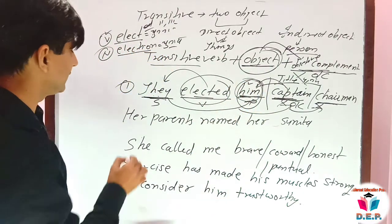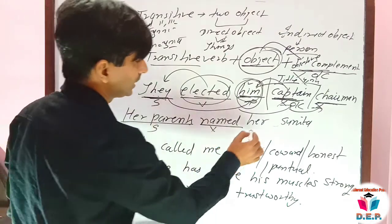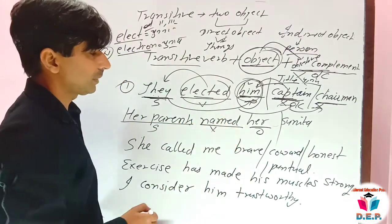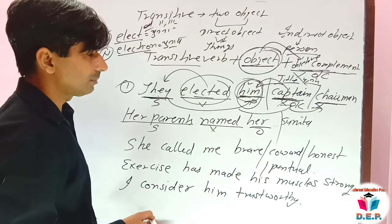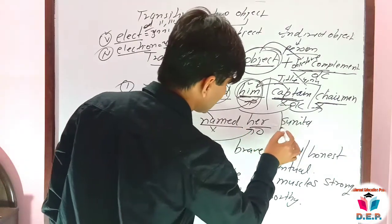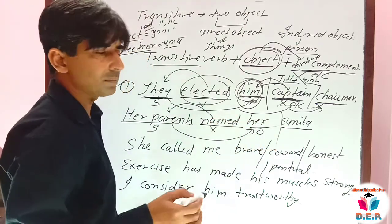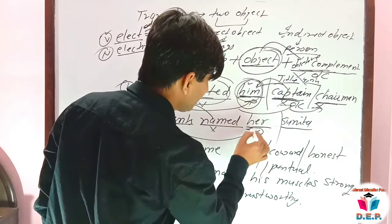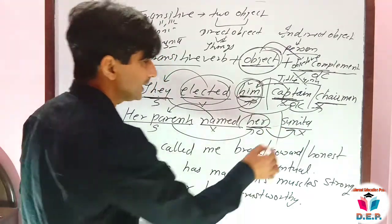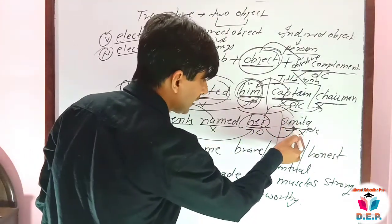The second sentence: 'Her parents named her' — 'her parents' is the subject, 'named' means to give a name, and 'her' is the object. Her parents named her — her parents gave her a name — but the meaning was not yet clear. So we added a name: Sunita. Now the sentence is clear: 'Her parents named her Sunita' — her parents gave her the name Sunita. The verb's effect reaches 'her'; beyond that, on 'Sunita,' the verb has no effect because it is just a name, a title. So we call this OC — it completes the deficiency of the object.